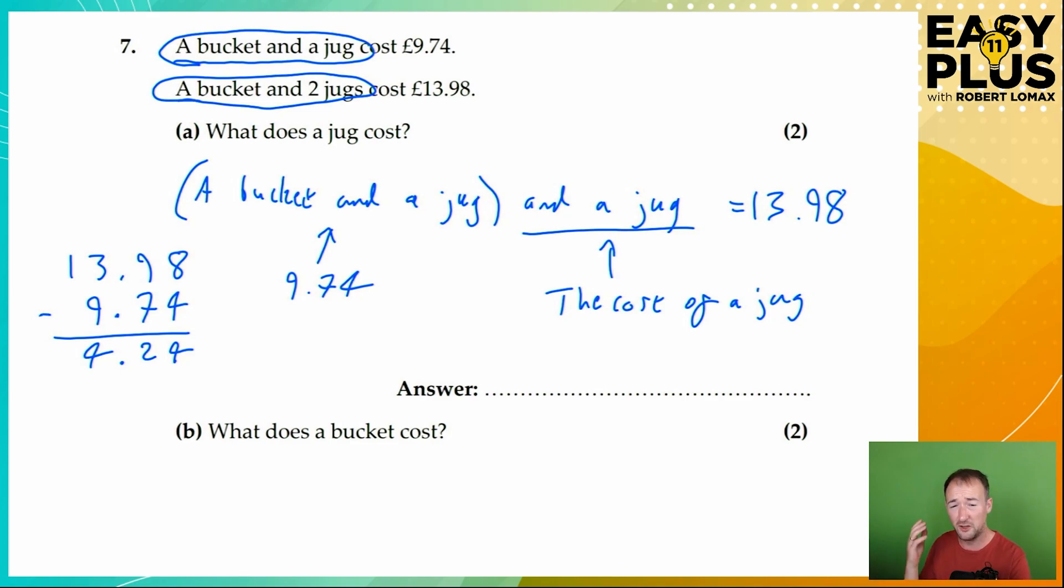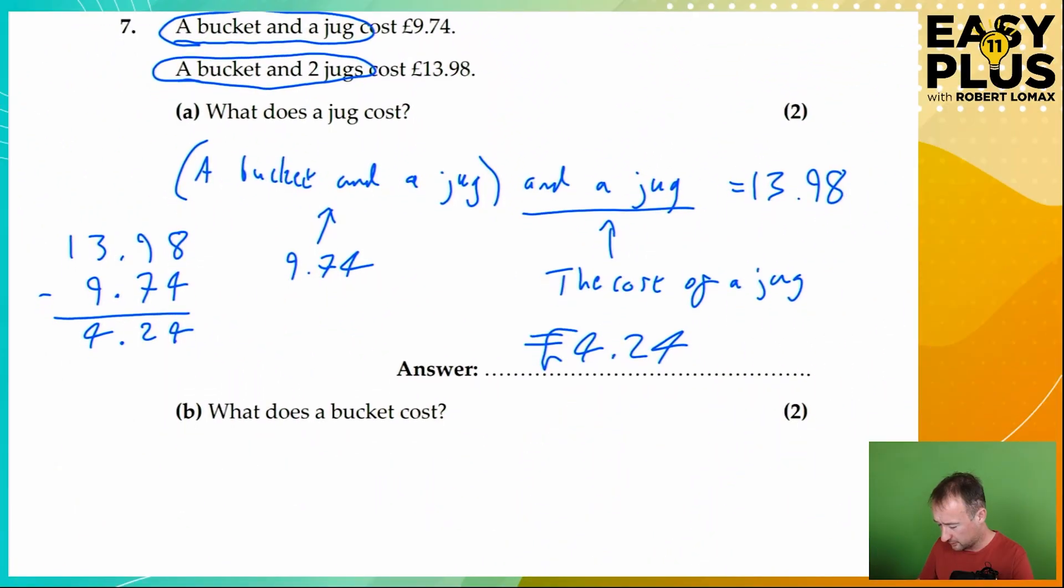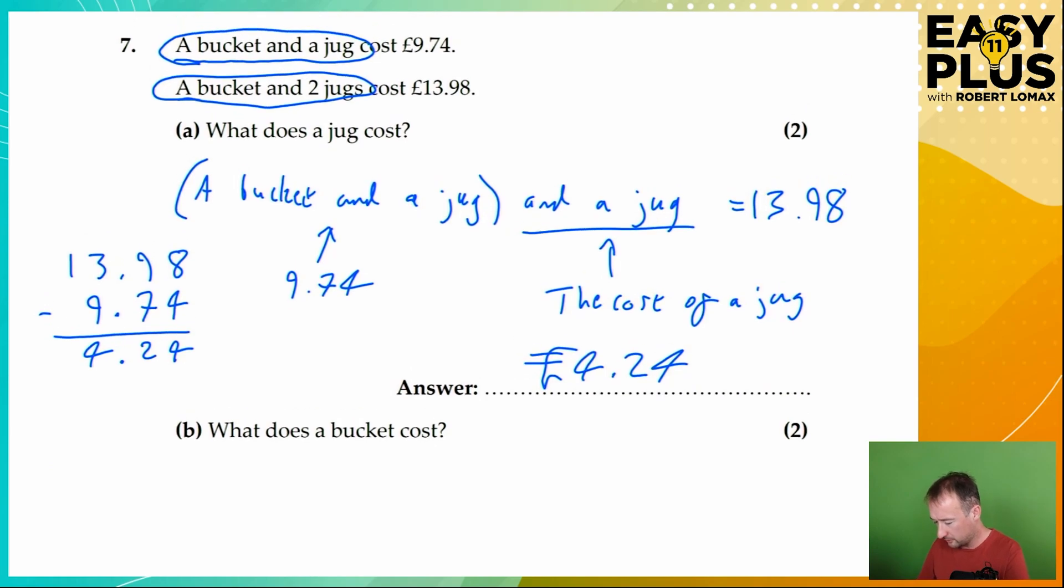Don't forget to write it in the answer space and don't forget the pound sign here. Even if your pound sign looks like mine. Okay, and now we need to find the cost of a bucket. Well, we know that a bucket and a jug cost £9.74 and now we know the cost of a jug. So all you have to do is take away the cost of a jug from the cost of a bucket and a jug.